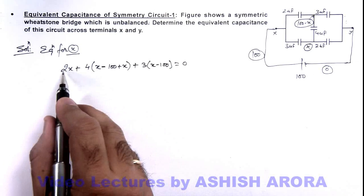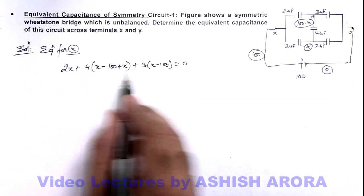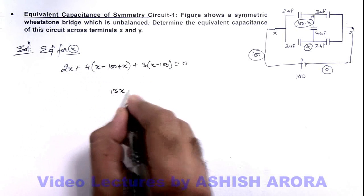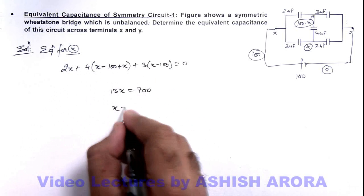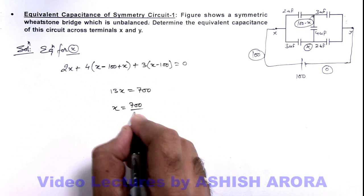On simplifying, it is 2 plus 8, 10 plus 3, this is 13x is equal to 400 plus 300, it is 700. So the value of x we are getting is 700 by 13 volt.